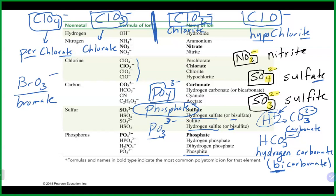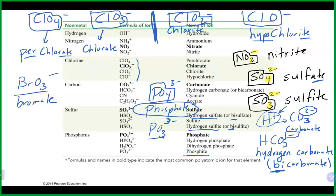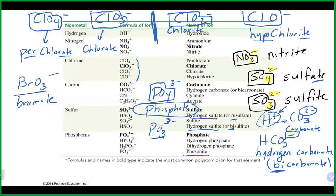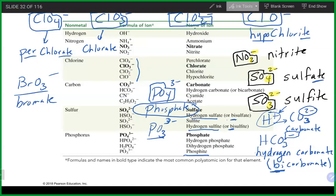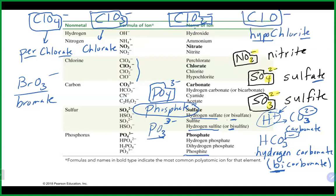Some polyatomic ions don't end in '-ate' or '-ite' — for example, hydroxide is OH⁻, which ends in '-ide.' But the vast majority will end in '-ate' or '-ite.'